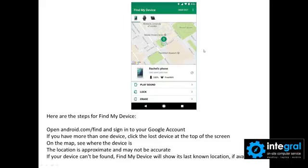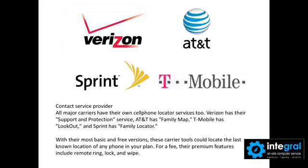Finally, if this is confusing for you as far as setting up your Android or Apple device for locating it, you can go to your cell provider — Verizon, AT&T, Sprint, or T-Mobile — and most of the major services have their own support and protection plans. As you can see, Verizon has Smart Support and Protection, AT&T has Family Map, T-Mobile has Lookout, and Sprint has Family Locator. You can use these tools with your cellular provider to locate your phone and verify that no one will get access to your information.